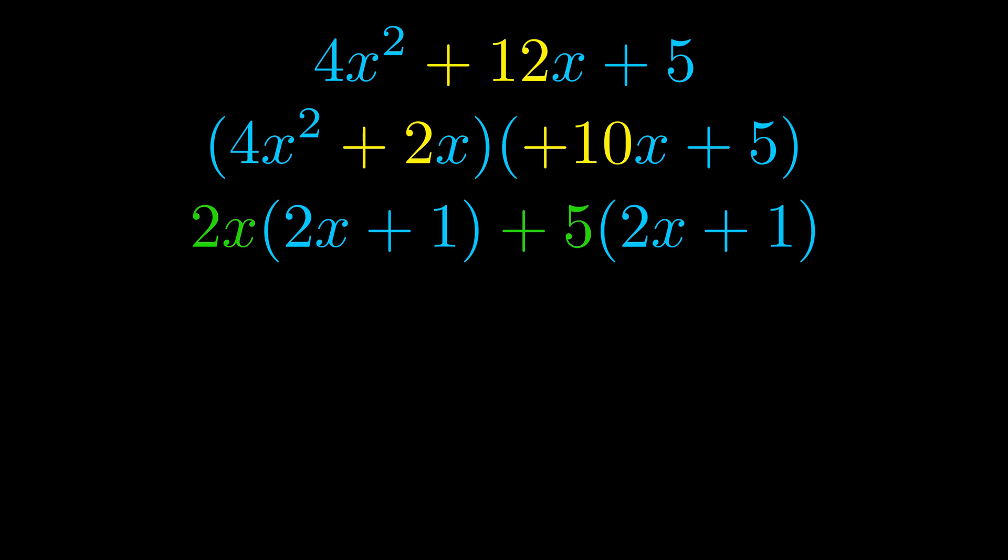Notice also how what remains inside of the parentheses is the same in both cases. The blue values are the same. Those blue values will become one of our factors and we will combine the two green values, the GCFs that we pulled out, to get the other one. And that is our fully factored equation.